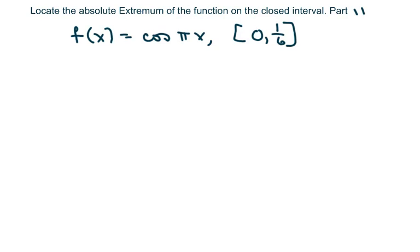This is a cosine function, and I first want to find any critical values that we might need to check for minimum and maximum.